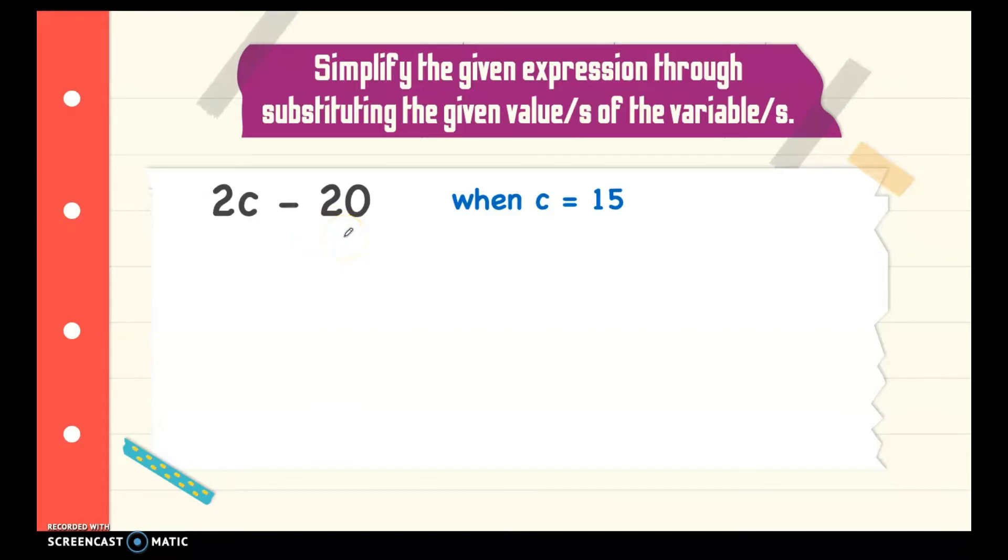Remember in our previous lesson that when a variable and a number are right next to each other, multiplication is implied. We write here 15 and then there's 2. We write parentheses to separate the 15 and 2 because if we put that together, it looks like 215.